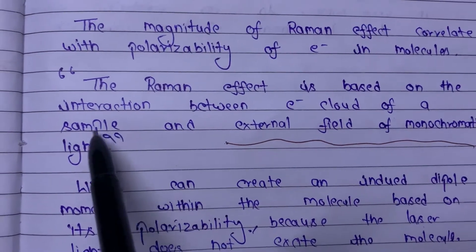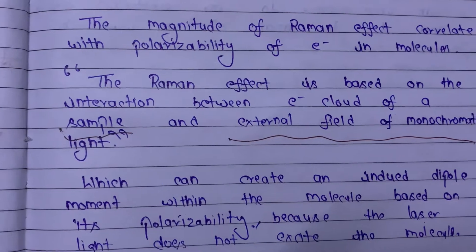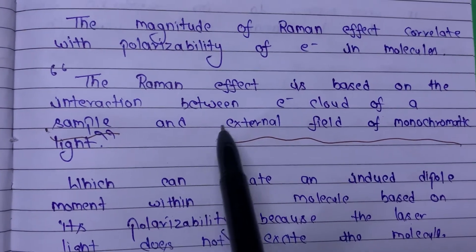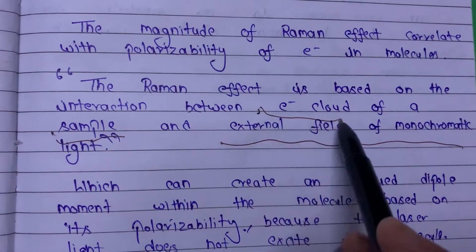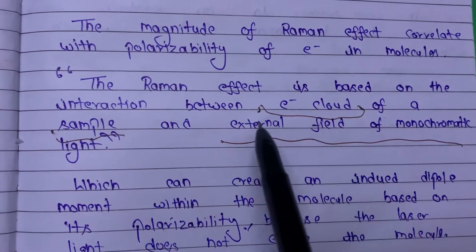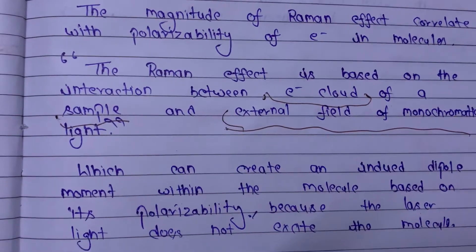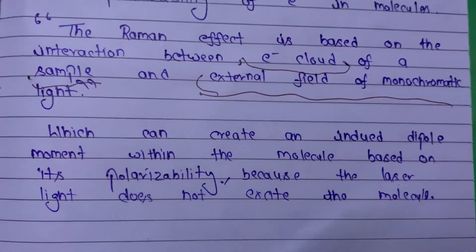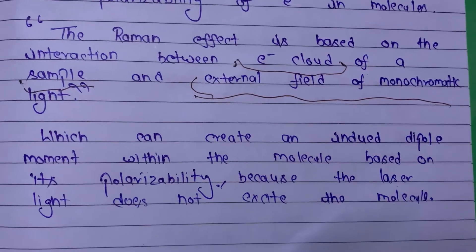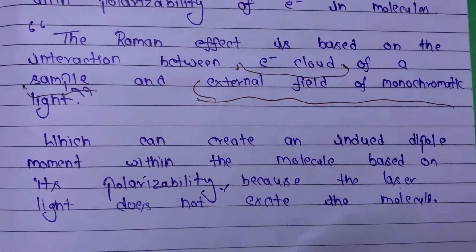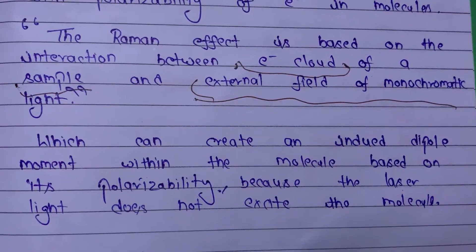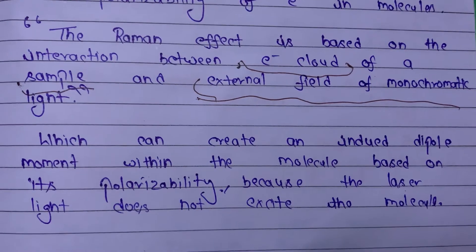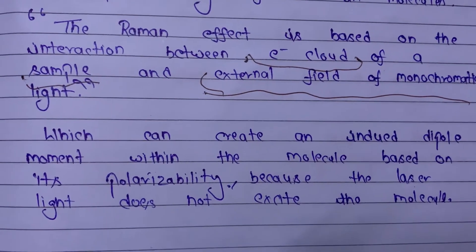Whenever you encounter the Raman effect, it works on two effects: first, the electron cloud of the sample; second, the external field of monochromatic light. These create an induced dipole moment within the molecule based on its polarizability. A second important point is that the laser light does not directly excite the molecule.